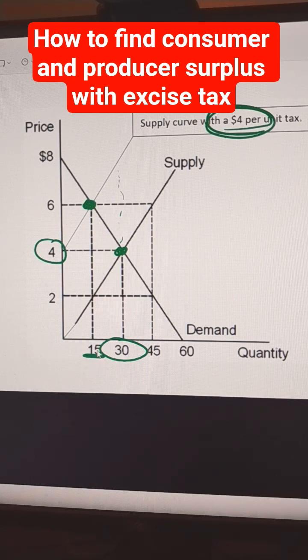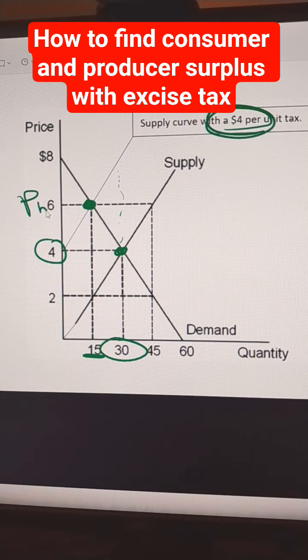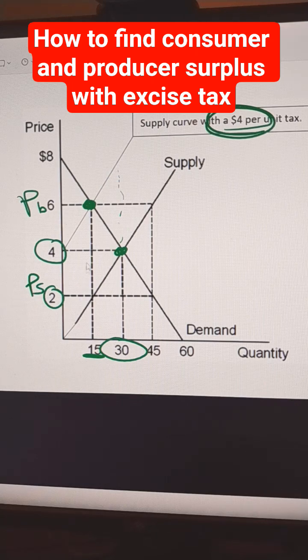Now they're going to sell 15 units. The price that the buyers pay will be $6. $4 goes to the government, so this is the price the sellers get to keep.